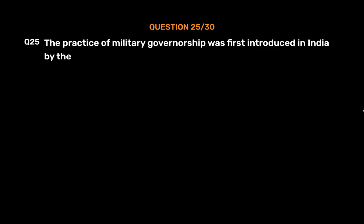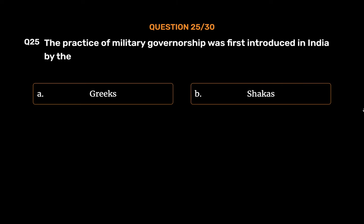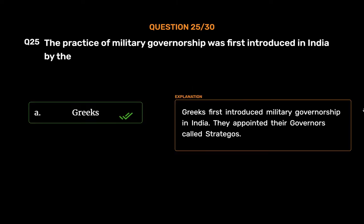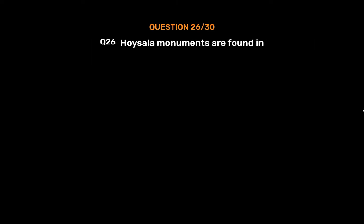Question number twenty-five: The practice of military governorship was first introduced in India by — Option A: the Greeks, Option B: the Shakas, Option C: the Kushanas, Option D: the Mughals. The correct answer is Option A, the Greeks. The Greeks first introduced military governorship in India; they appointed their governors called Strategas.